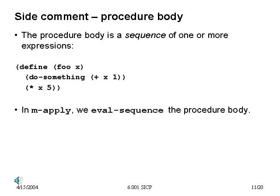In the evaluators we built before, applying a procedure reduced to evaluating the body with respect to a new environment — we assumed the body was just one single expression. Before we introduced mutation, that made sense, because the value of the body would be the value of the last expression. Once we have mutation, though, expressions can do things other than return values — they can create side effects. So a generalization is to let the body of a procedure be a sequence of one or more expressions.